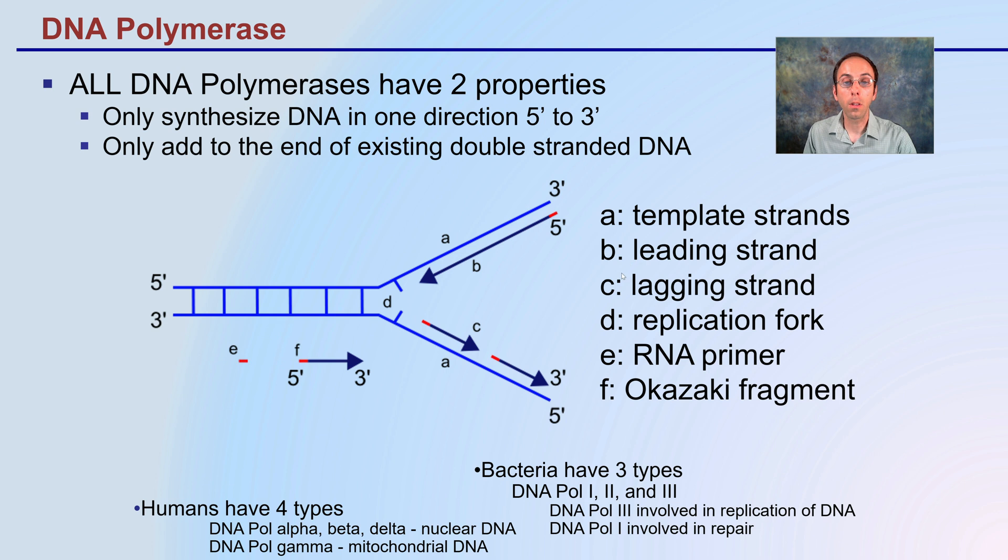You can see all the individual components labeled here. A being our template strand. This is our leading strand. This is an example of our lagging strand. Our replication fork and our RNA primer would be this little red region we see located here and here. That's the little flag that says start here. We have our Okazaki fragments. Here's one independently here, but they would be on that lagging strand.